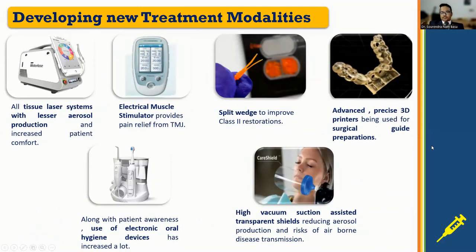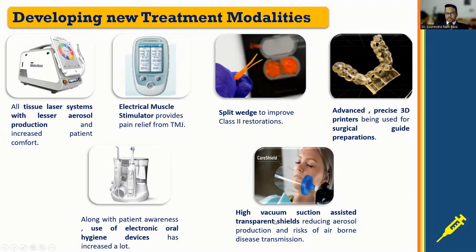Developing new treatment modalities is another hot topic. Soft tissue laser systems with reduced laser aerosol production have been introduced. Electrical muscle stimulators providing pain relief from the TMJ have also been introduced. The Speedy technique can improve Class II restorations. Advanced precise 3D printers have been used for preparing surgical guides. For patient maintenance and awareness, use of electronic oral hygiene devices has significantly increased. High-vacuum suction-assisted transparent shields have been shown to reduce aerosol production and the risk of airborne disease transmission, with some of these devices developed during the COVID-19 pandemic.